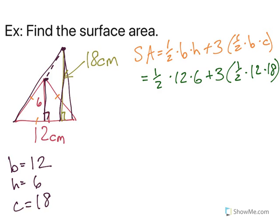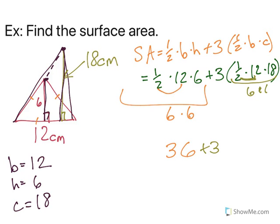Again, do this in chunks. I'm a big fan of chunks. So on the first half we take half of 12, which is 6, and 6 times 6 is 36. Okay, then let's go to the next one. I'm gonna have plus 3 because that's on the outside. Let's work inside: half of 12 is 6.